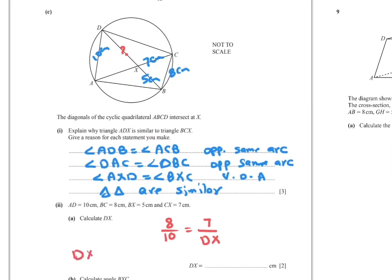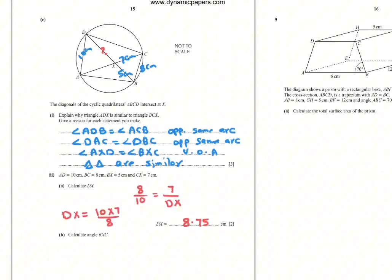Cross multiply to find DX. So DX equals 10 times 7 divided by 8 equals 8.75. Part B, calculate angle BXC. In this triangle we have three sides, so we can find this angle using cosine rule. Cosine inverse, bracket, 7 squared plus 5 squared minus the opposite side squared over 2 times 7 times 5, equals 81.8 to one decimal place.